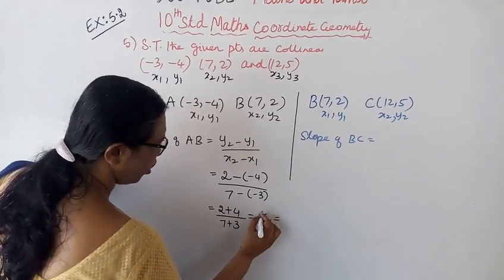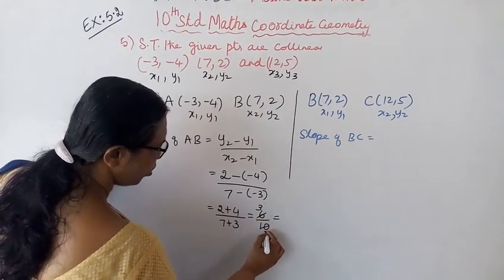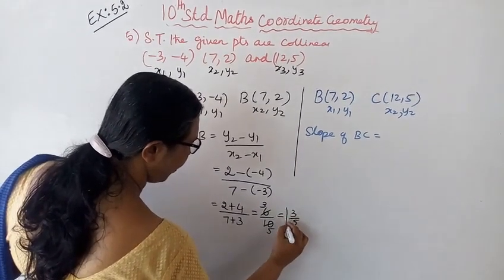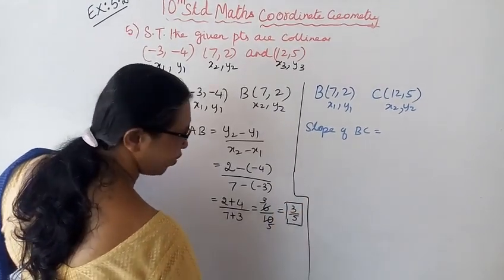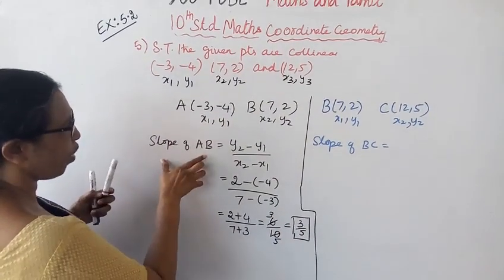Cancel by 2: 6 becomes 3, 10 becomes 5. So slope of AB is 3 by 5.